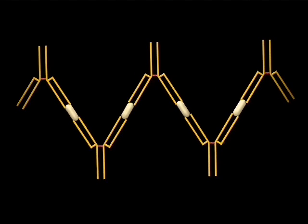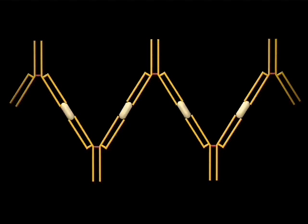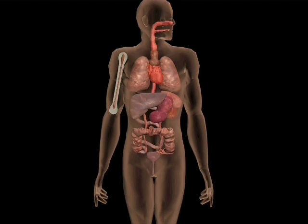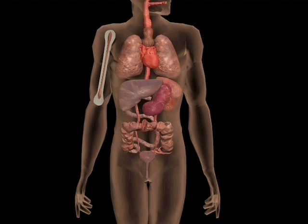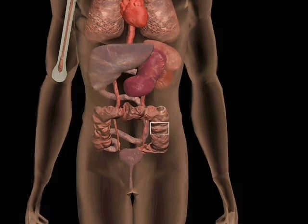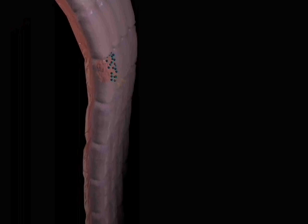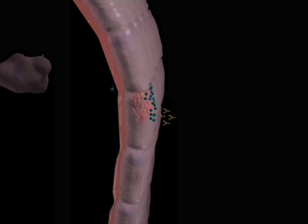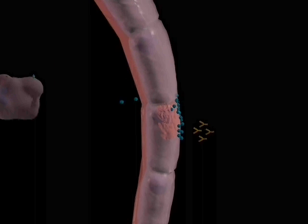Should the protective effects of IgA be inadequate and bacteria succeed in attaching to the tissue wall such as the epithelium in the gut, they will divide on the luminal surface and invade the underlying tissue. An example of this is seen in S. typhi, the causative agent of typhoid fever.